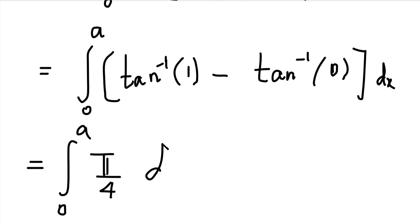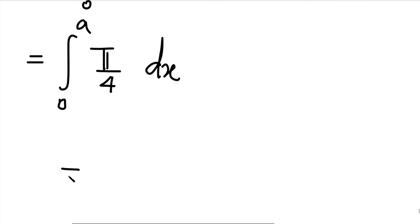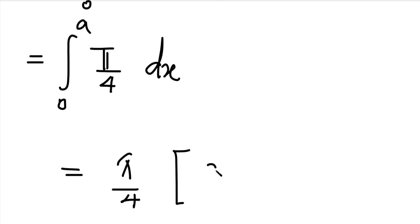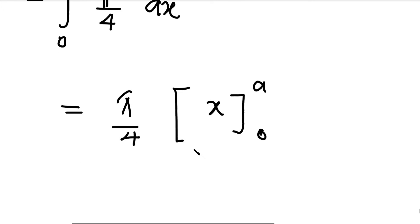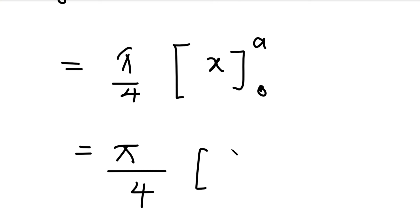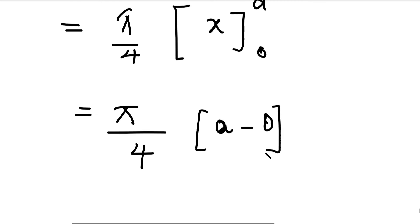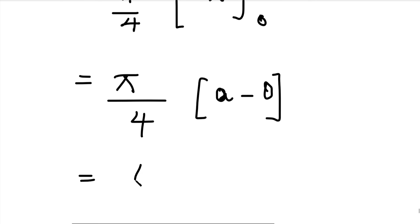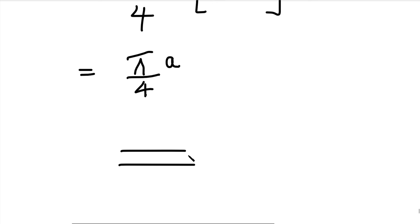So the expression simplifies to integral from 0 to a of π/4 dx. Since π/4 is constant, we take it outside: π/4 times integral of dx from 0 to a, which equals π/4 times [x] from 0 to a. Applying the limits: (a − 0) = a. Therefore the final answer is π/4 × a = πa/4. This is the value of the given double integral.